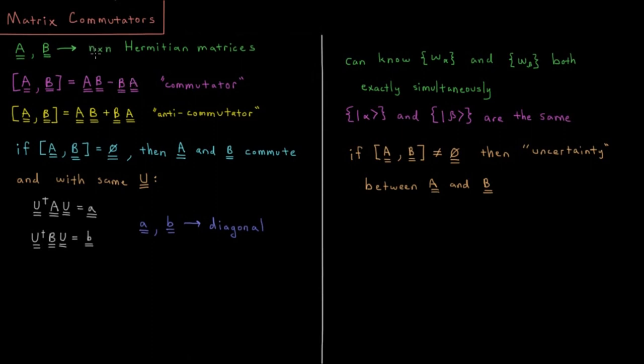Because both of these are n by n we can multiply them in either order. So we have the difference between multiplying A times B and B times A. This is called the commutator of A and B.